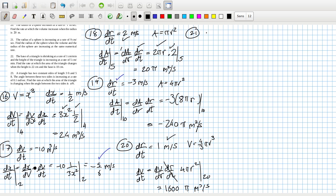So 20 squared times 4, so 1,600 pi meters cubed per second. 21. The radius of the sphere is increasing at the rate of 9 centimeters per second. Find the radius of the sphere when the volume and the radius of the sphere increase at the same rate, interesting.